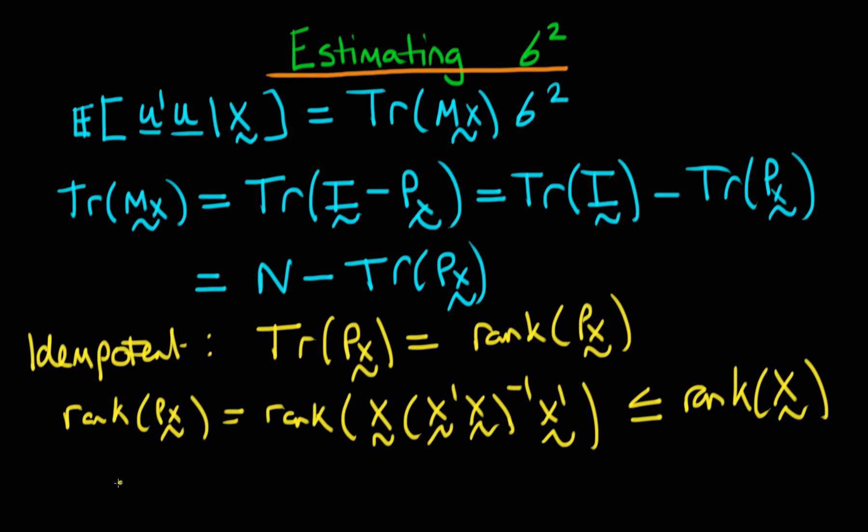And we know that the rank of x is equivalent to the rank of px times x. Why do we know that? Well we know that px times x is just equal to x because x already lies in its column space, so when I take the orthogonal projection of x it just yields itself.